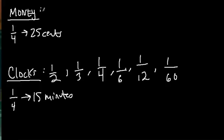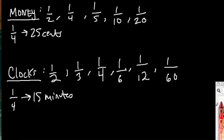Now, money, the coins that work really well are one-half, one-fourth, right? 50 cents, 25 cents. One-fifth, which is 20 cents. One-tenth, which is a dime. And one-twentieth, which is our nickel.